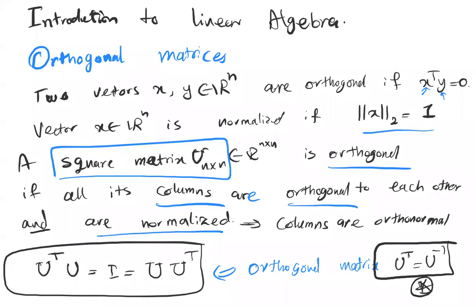Before we talk about the properties of orthogonal matrices, let's review one more time. An orthogonal matrix should be a square matrix, its transpose is equal to its inverse, and all of its columns should be orthogonal to each other — in this case we call the columns orthonormal — and each of the columns should also be normalized.